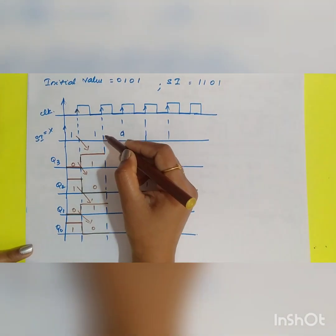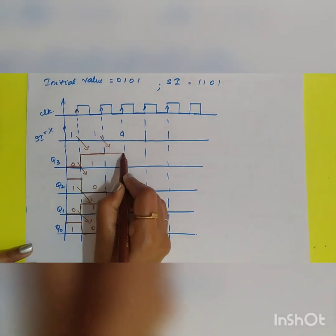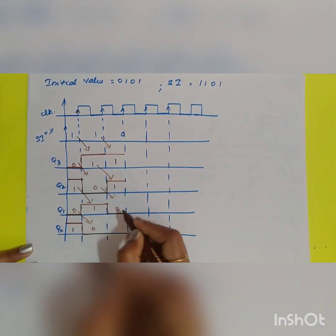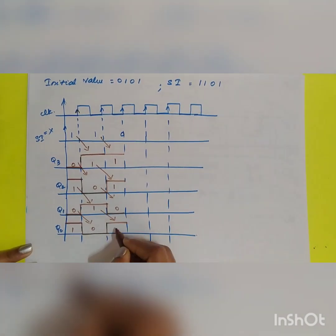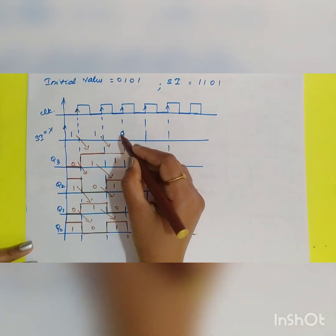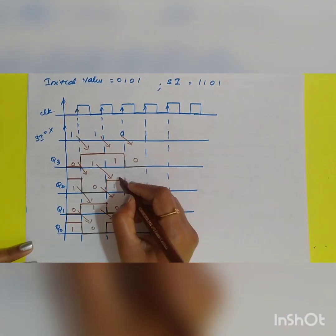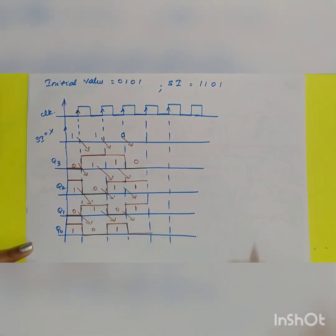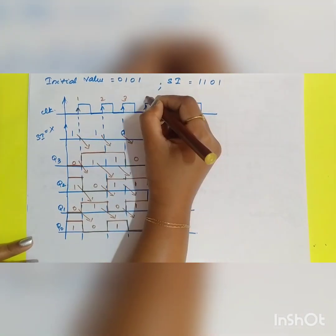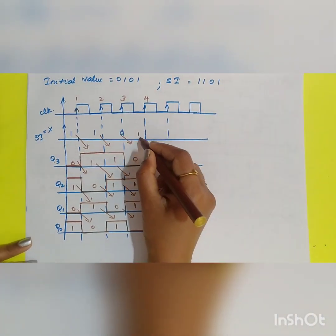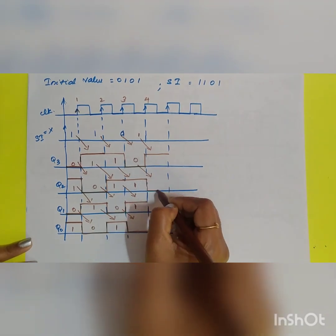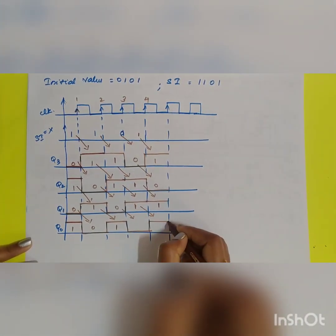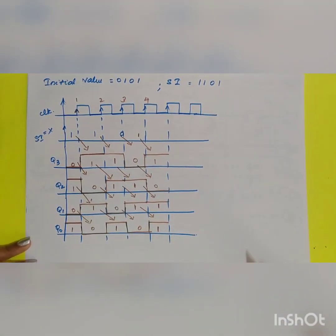During the second clock pulse, the second input bit '1' enters D3, so Q3 remains 1. The previous Q3 value 1 shifts to Q2, changing it to 1. The previous Q2 value 0 shifts to Q1, changing its state. During the third clock pulse, the input bit '0' enters, so Q3 becomes 0. During the fourth clock pulse, the input bit '1' shifts into D3, giving Q3=1, with previous values cascading through Q2, Q1, Q0.